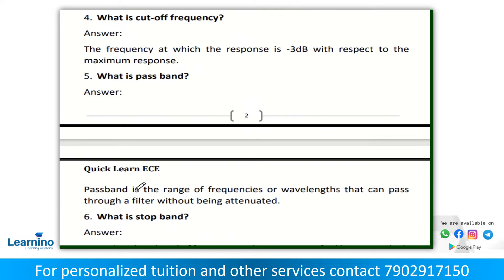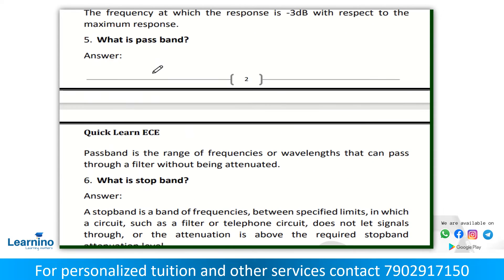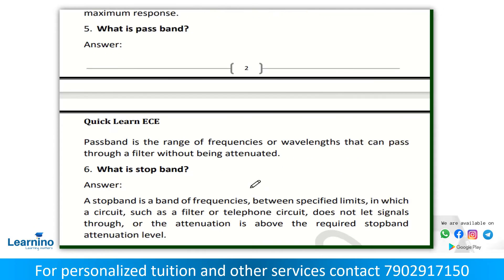Question number four: what is cutoff frequency? The cutoff frequency is the frequency at which the response is minus 3 dB with respect to maximum response. Question number five: what is pass band? Pass band is the range of frequencies or wavelengths that can pass through a filter without being attenuated.